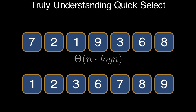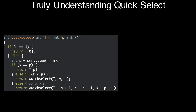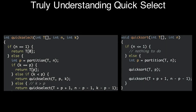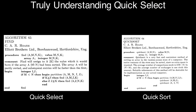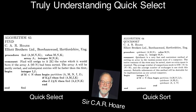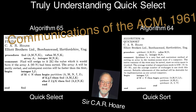This approach works, but QuickSelect is computationally more efficient, at least on average. QuickSelect is a lot like the QuickSort algorithm. Both were invented at about the same time by Sir Tony Hoare, and they were published as Algorithm 64 and Algorithm 65 in the Communications of the ACM in 1961.